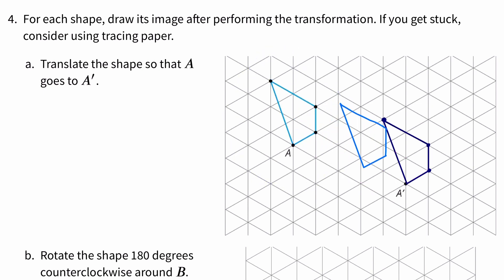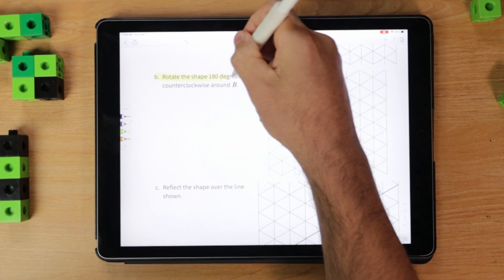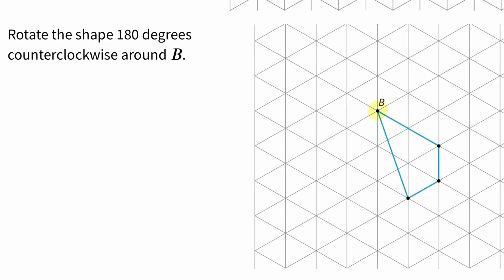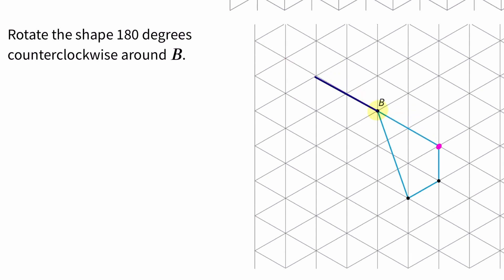Let's just check to make sure. Now rotate the shape 180 degrees counterclockwise around B. There's B. A distance to one of the points at 180 degrees is just going to create a line that's collinear to the original, and the distance is going to be that same exact distance from the original point. Of course, a 180-degree rotation creates a straight line — it's collinear.